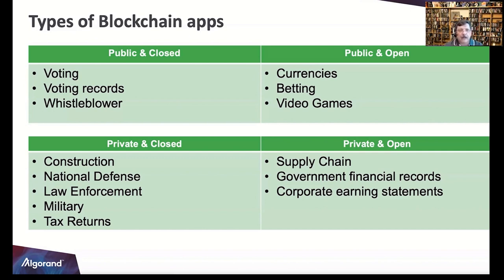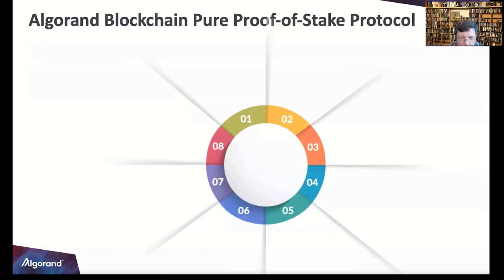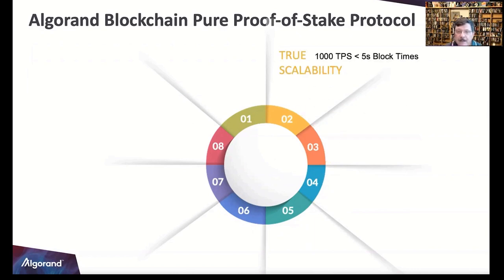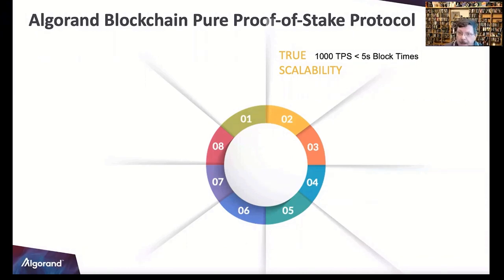To end this section: our protocol is named Pure Proof of Stake. Scalability has been pegged at a thousand transactions per second and it's getting better. Block times are under five seconds and improving — true scalability.